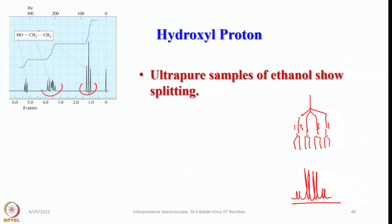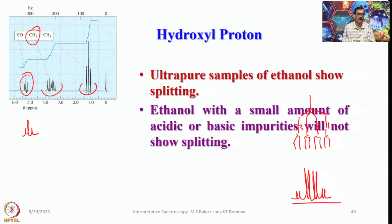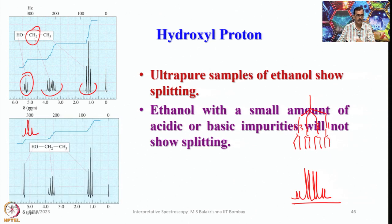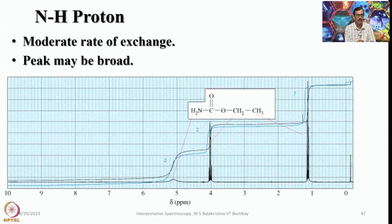However, ethanol with a small amount of acidic or basic impurities will not show this OH splitting. The splitting due to OH or NH vanishes with small amounts of acidic or basic impurities. In impure samples, OH shows only one signal, CH2 shows the usual quartet, and CH3 shows a triplet. For NH protons, a moderate rate of exchange is observed and the peak may be broad.